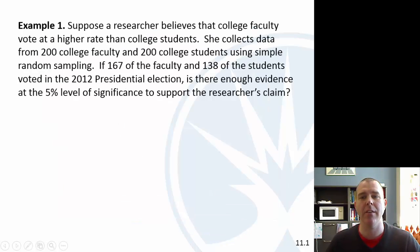Moving on, let's look at an example. Suppose we have a researcher who thinks that college faculty vote at a higher rate than college students. We collect data from 200 of each: a random sample of 200 faculty, 200 students. We have 167 faculty, 138 students. Is there enough evidence to support the researcher's claim?